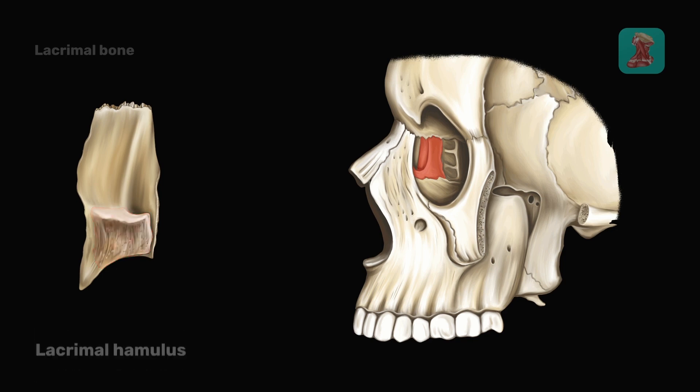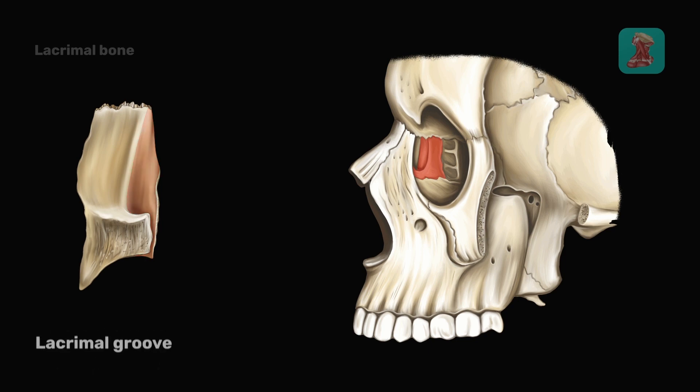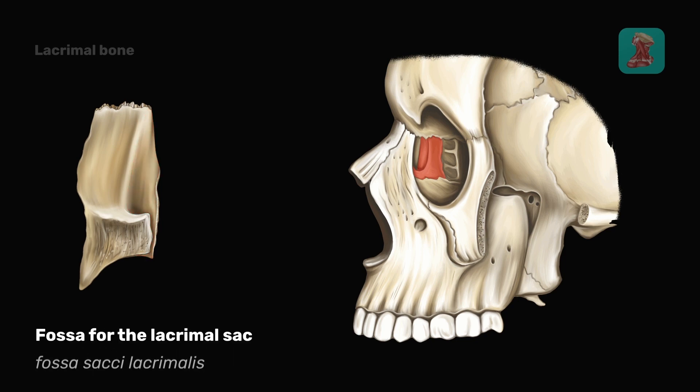There is a lacrimal groove in front of the crest. Together with the lacrimal groove of the maxilla, it forms the fossa for the lacrimal sac, where the lacrimal sac is located.